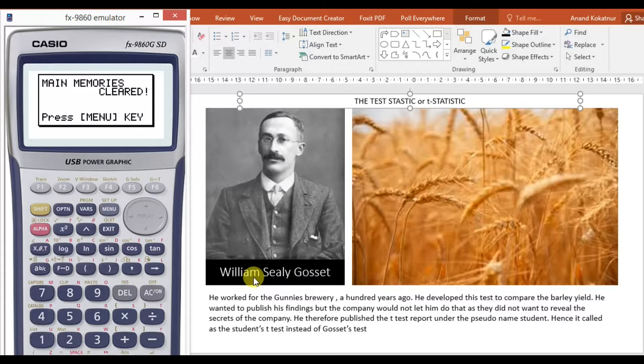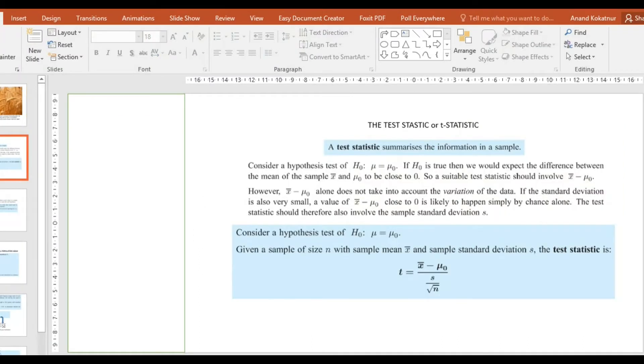Now let's dive into what it's for. The t-test summarizes the information in a sample. Let's consider hypothesis test of H₀, which is μ = μ₀. μ is a Greek letter used in statistics. If H₀ is true, then we would expect the difference between the mean and μ₀ to be closer to zero.